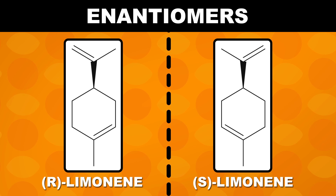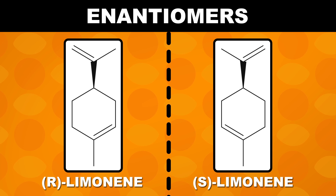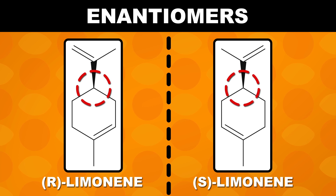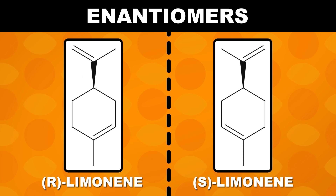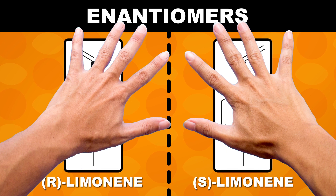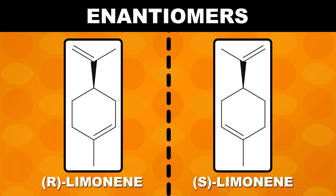Limonene is an enantiomeric molecule. Enantiomers have the same chemical formula but a different 3D arrangement of their bonds. The molecules are actually mirror images of one another that cannot be superimposed, kind of like our left and right hands. Chemists refer to these mirror image molecules as R and S enantiomers.